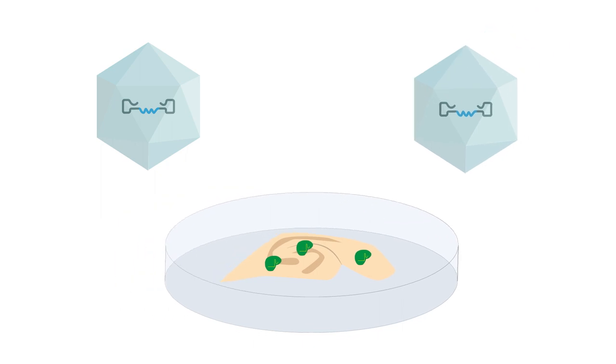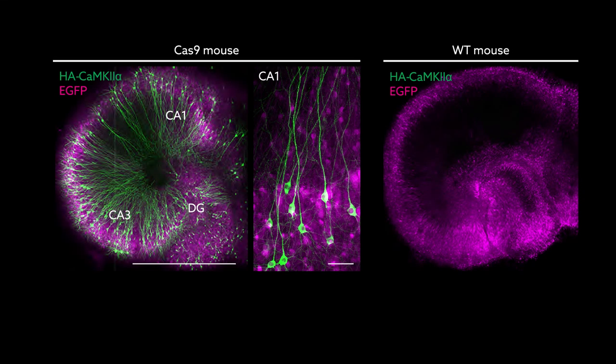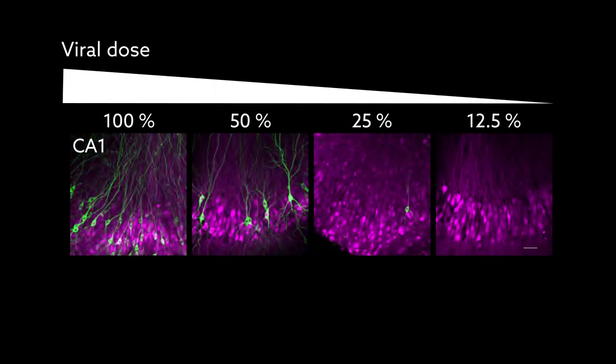The team tested the approach in mouse brain slices, using CRISPR to add HA or GFP to a protein found in neurons. The gene editing beautifully lit up neurons, many of which were no longer dividing, in genetically engineered mice expressing the Cas9 protein. But the success rate depended on the dose of the virus.